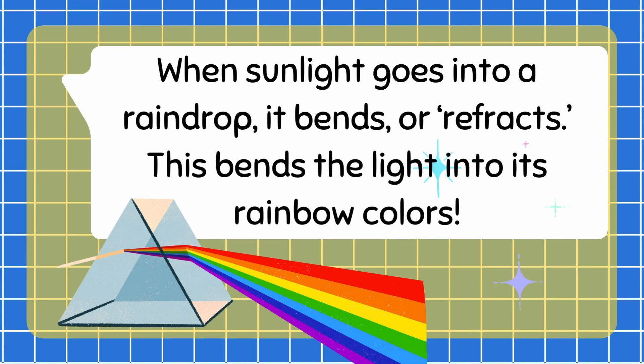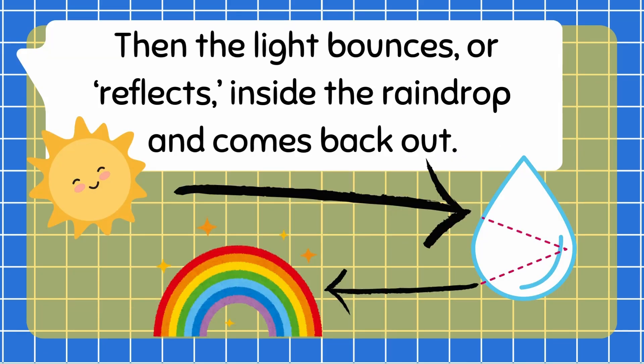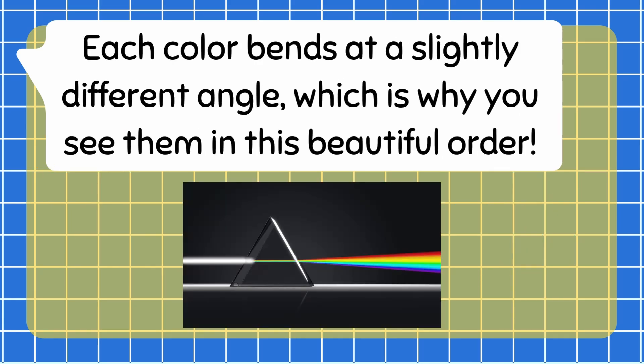When sunlight goes into a raindrop, it bends or refracts. This bends the light into its rainbow colors. Then the light bounces or reflects inside the raindrop and comes back out. That's how you see a rainbow!